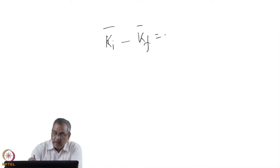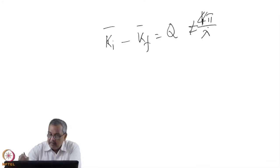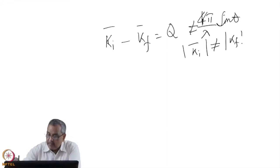Now what I have is ki minus kf equal to q. This q is not equal to 4π by λ sin θ. I must mention it specifically because now it is an inelastic process, so length of ki is not equal to kf.